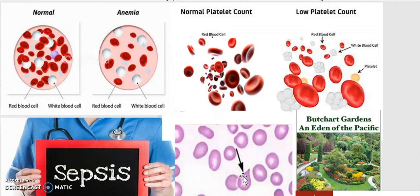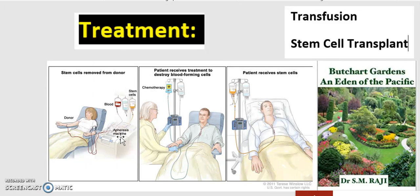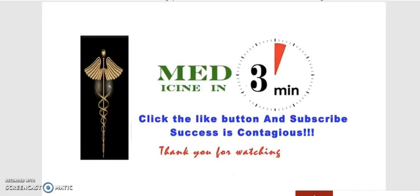If you remember those four main findings, you should be well prepared. For treatment, the two main options are a transfusion or a stem cell transplant. There is a diagram illustrating exactly the process of a stem cell transplant.